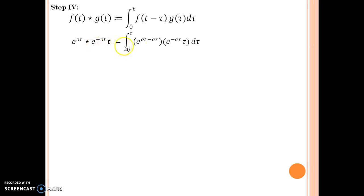Then g of tau, you have to replace t by tau. So e to the power minus a tau multiplied by tau, d tau. After doing this what you happen to get is e to the power a t times integral 0 to t tau into e to the power minus 2a tau d tau.